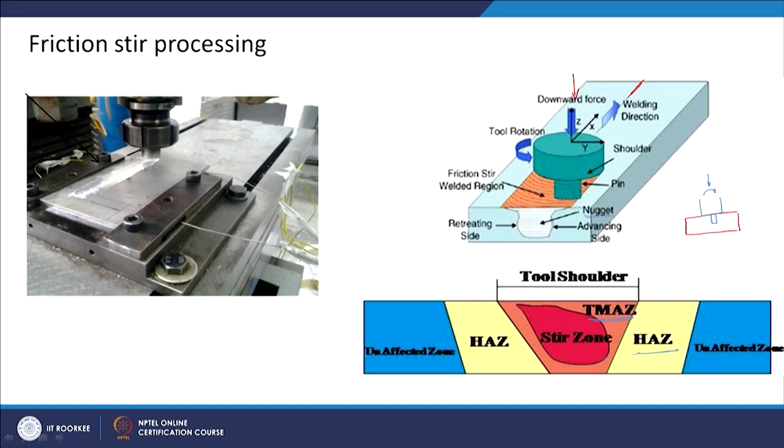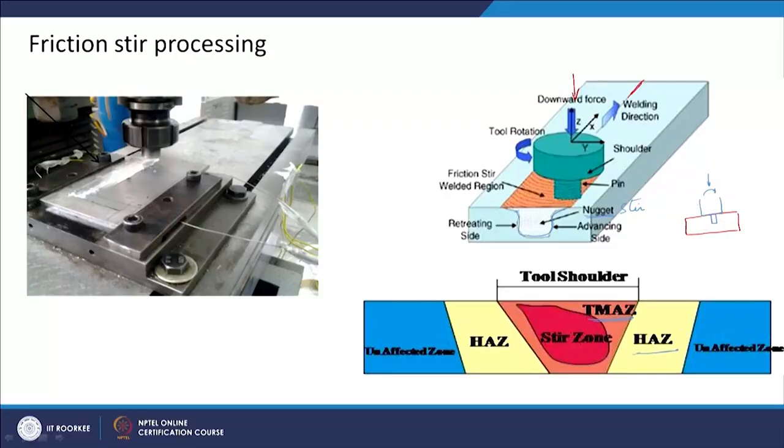Both thermal and mechanical processes are combined here. If it is a welding process you do welding; if it is a monolithic material then you can consider it as processing. In the stirred zone, they have shown a stirred zone, then a thermomechanically affected zone, then a heat affected zone, and an unaffected zone. In what we call the nugget or stirred zone, because of this shear deformation, the grain size gets refined and you get better properties because of the reduction in grain size. This is an actual image of friction stir processing - if you have a milling machine, you can easily modify it to do this kind of process.